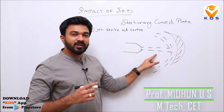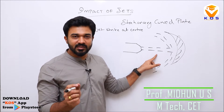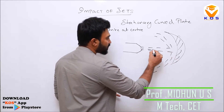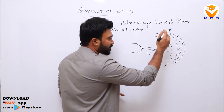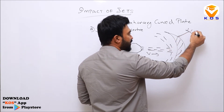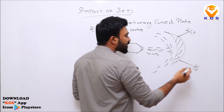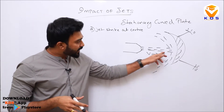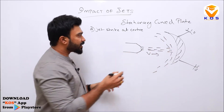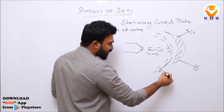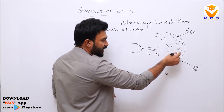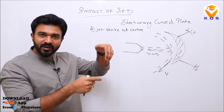In this case, we have a curved plate with a V-velocity, and it is stationary — there is no movement. The water exits the curve going in the outward direction at an angle theta.